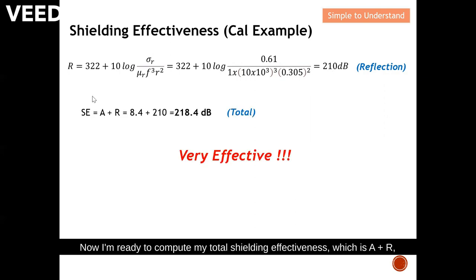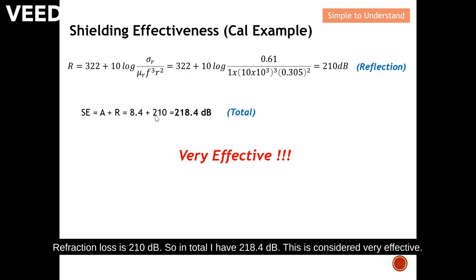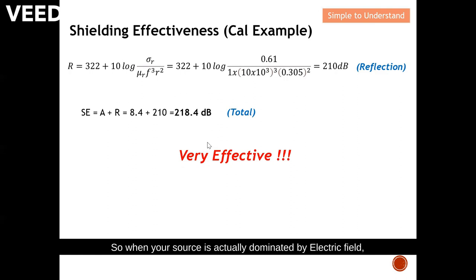Now I'm ready to compute the total shielding effectiveness, which is A plus R. The absorption is 8.4 dB and the reflection loss is 210 dB, giving a total of 218.4 dB. This is considered very effective — when your source is dominated by electric field, you can typically build a very effective shield to counter the interference.